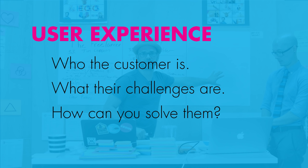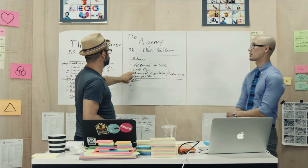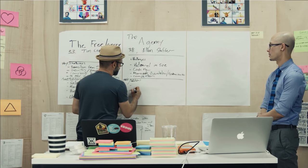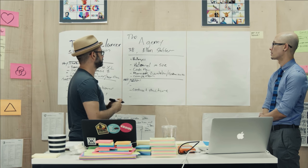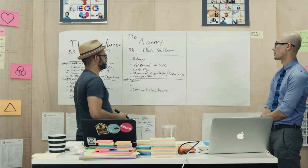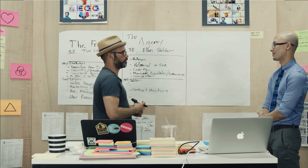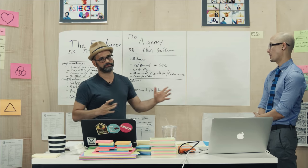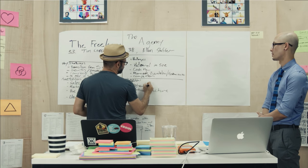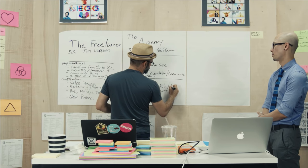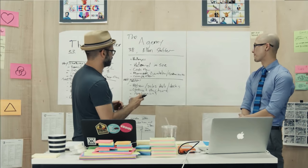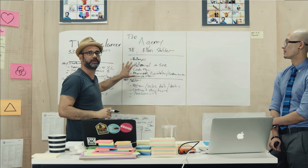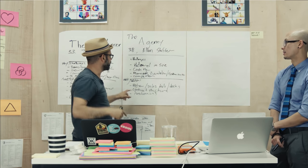Solutions for the agency: for cash flow, contract structure helps — you can get paid more frequently with split payment schedules tied to deliverables. For plateau and size, you need to demonstrate higher value to charge more, which means sales tools like decks — and positioning is a big one. So the agency solutions are: contract structure and positioning. Now I'm using a fairly thick marker because it needs to be visible on camera and readable from across the room when facilitating with a team.